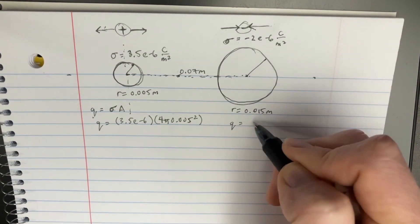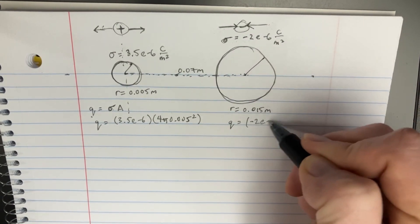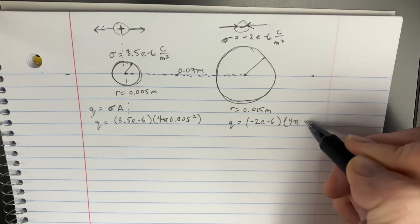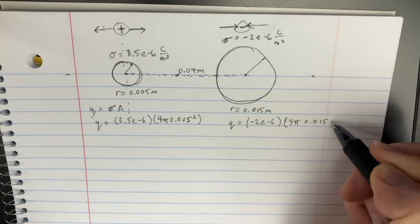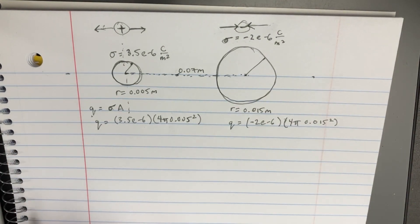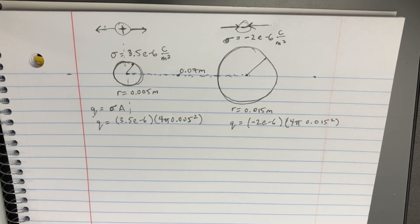Now, on this side, the q is going to be equal to this thing, which is negative 2 e to negative 6 and then times 4 pi 0.015 squared. And now we can start comparing these q's to each other.